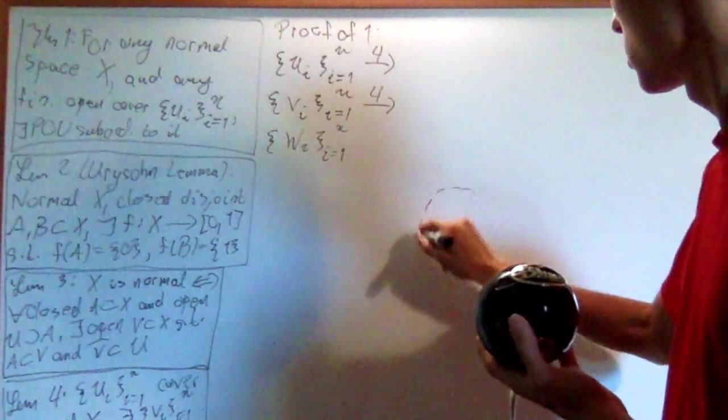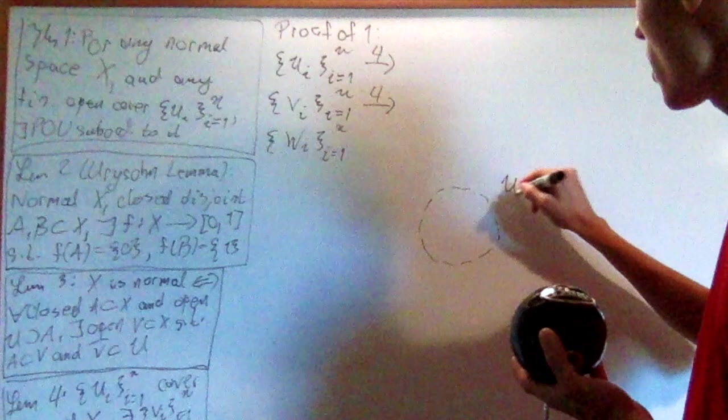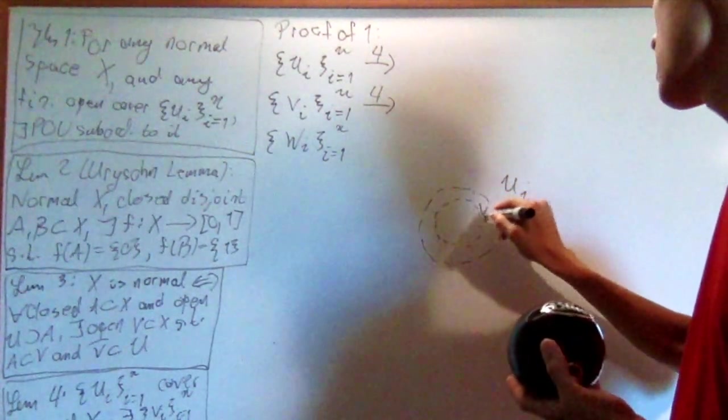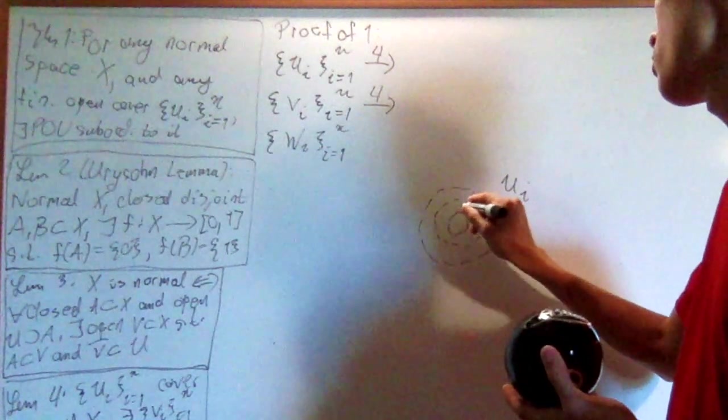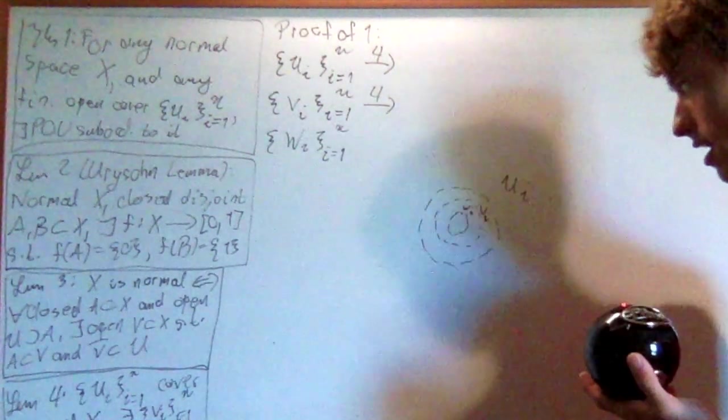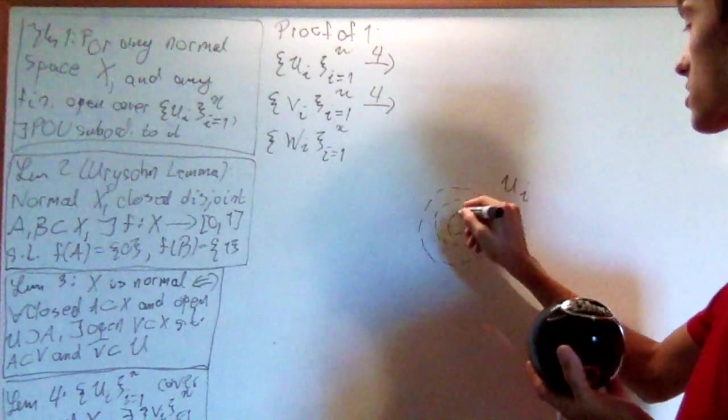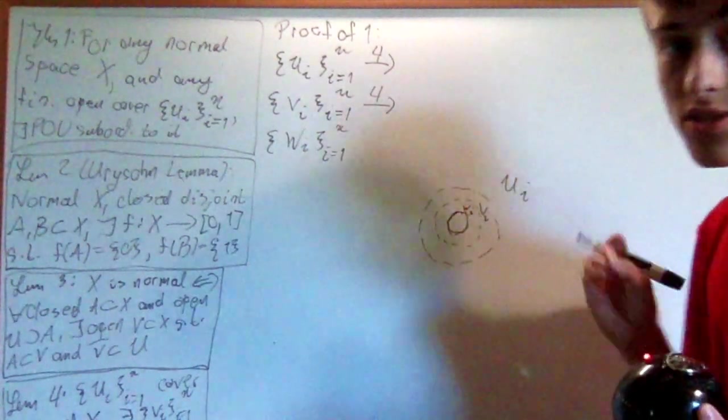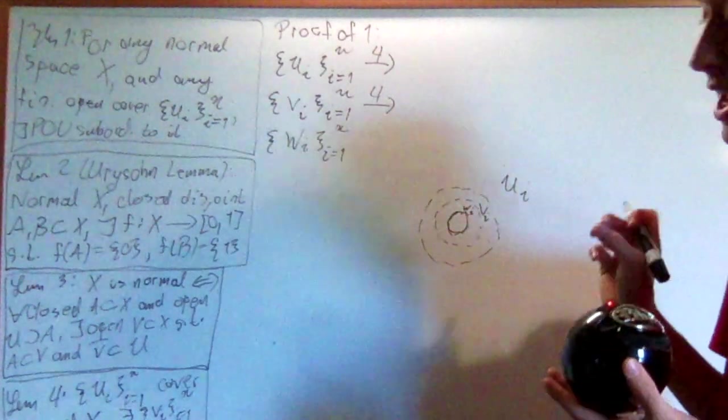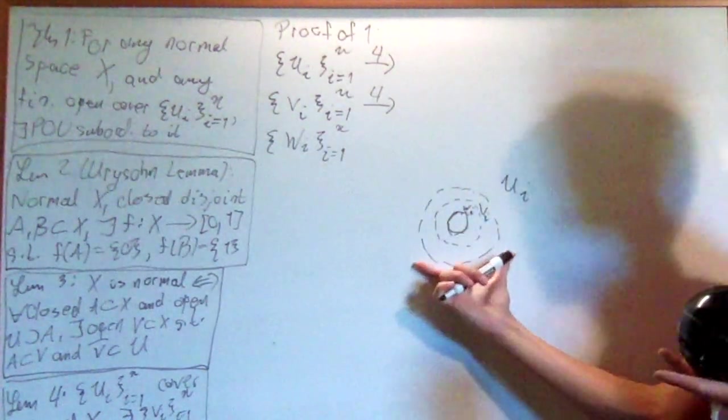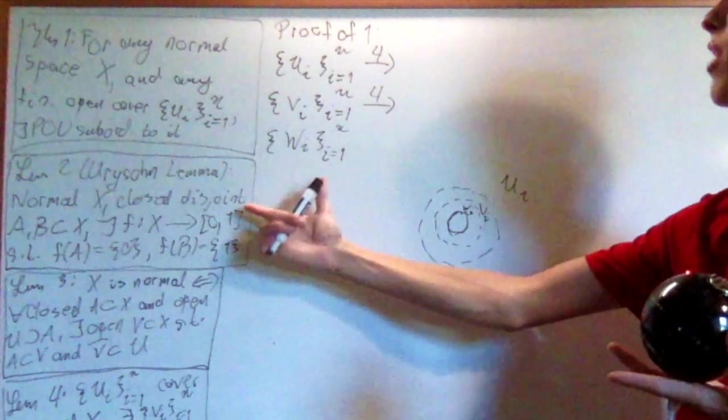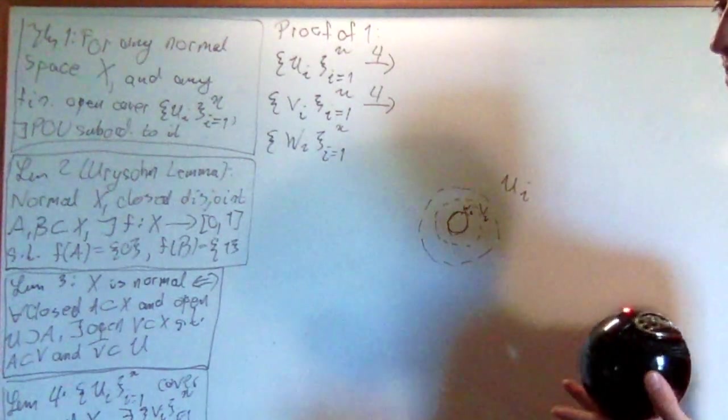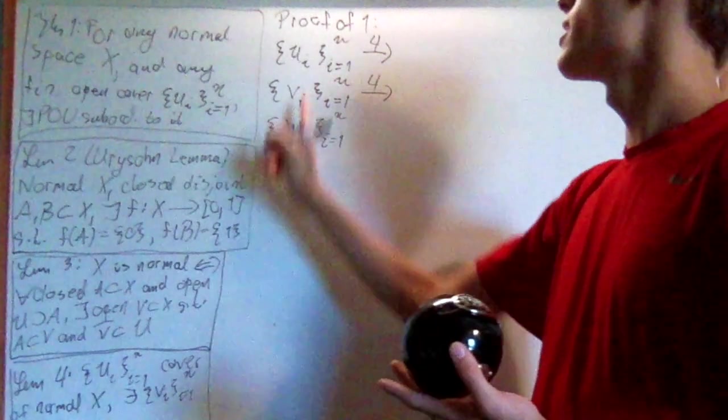Let me draw out a picture. So we have right here u i, and then in here we have v i, and then in here we have w i. And in each of these instances, when I close them, all of this order is kept. And the important part about this is that this maintains the open cover status. It keeps it being an open cover. And now we have this chain.